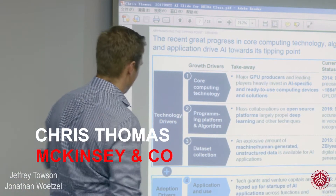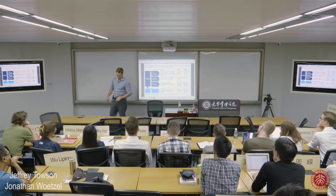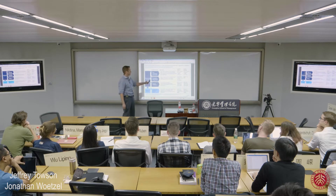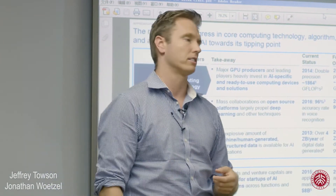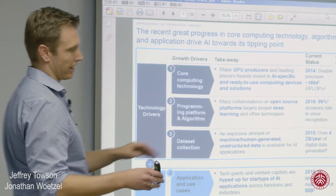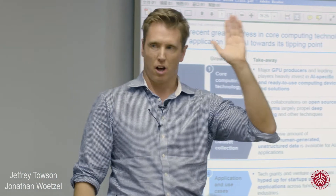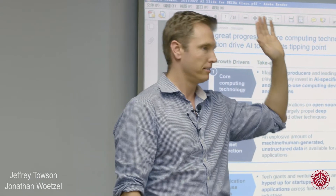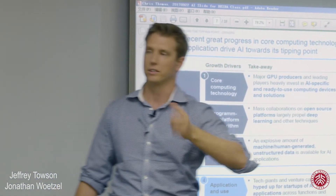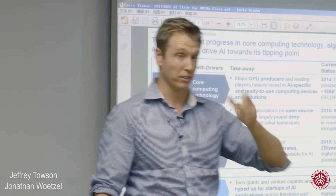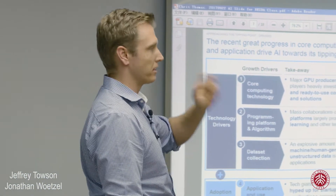There are basically three things that matter around the technology drivers of artificial intelligence. The first is core computing technology — how quickly you can process and learn. Right now in natural language processing we're actually doing double the speed of Moore's Law. If you look at Nvidia's roadmap, Intel's Nirvana roadmap, or the Movidius roadmap, flops per second are more than doubling per year, which is really impressive.